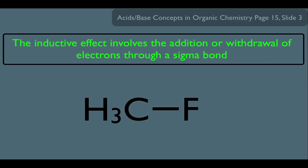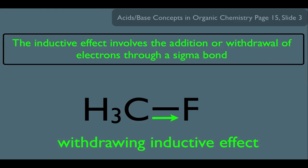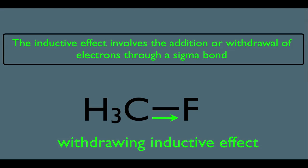Look at the bond between the carbon and the fluorine here — that is definitely a sigma bond. Since fluorine is more electronegative than carbon, fluorine would pull the electrons in this bond away from carbon. We would call this a withdrawing inductive effect: the F is withdrawing electrons away from the carbon through a sigma bond.